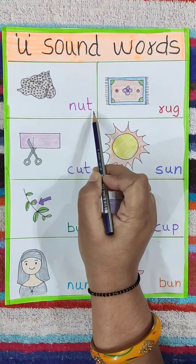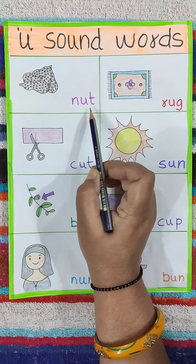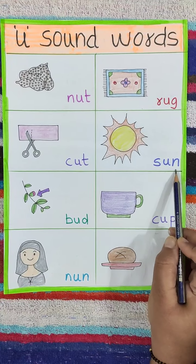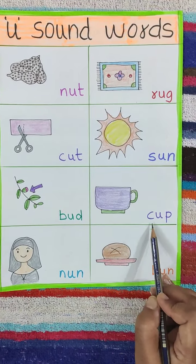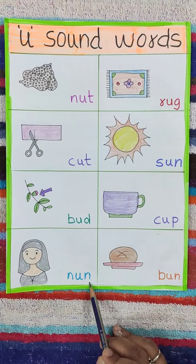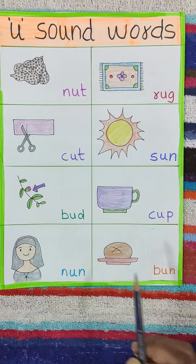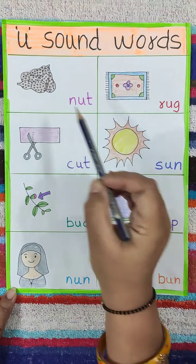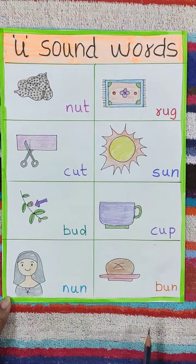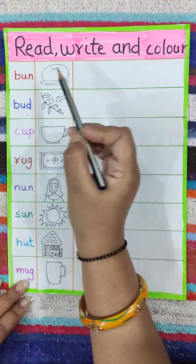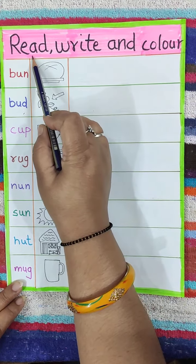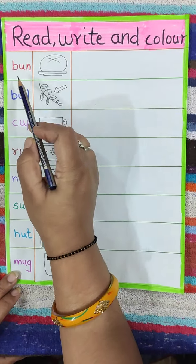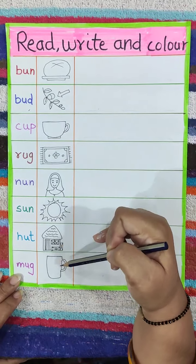Now we will spell the spellings of each and every word. Okay children, you have to practice and learn how to read and write U sound words. Now see here children, here are some worksheets you have to do. Read, write and color. Here some U sound words are written and some pictures are made. You have to spell them and write them three times and color all the pictures.